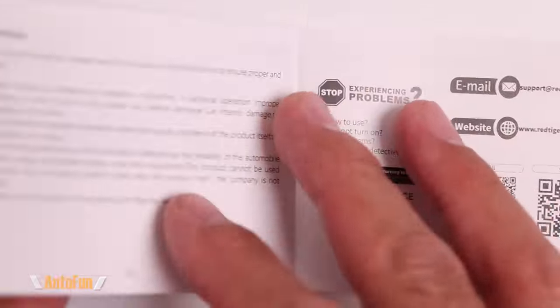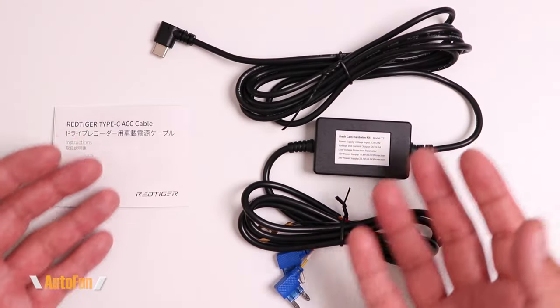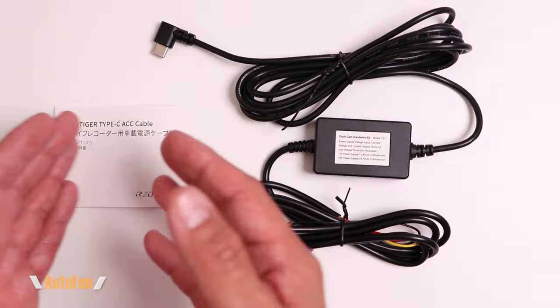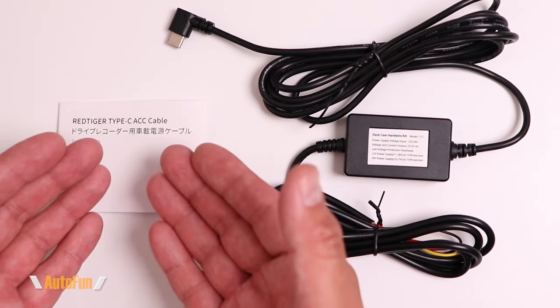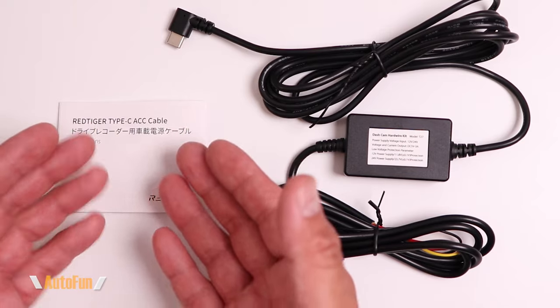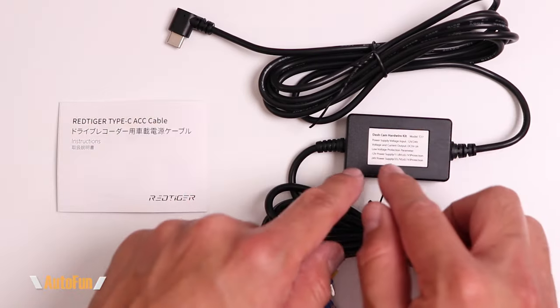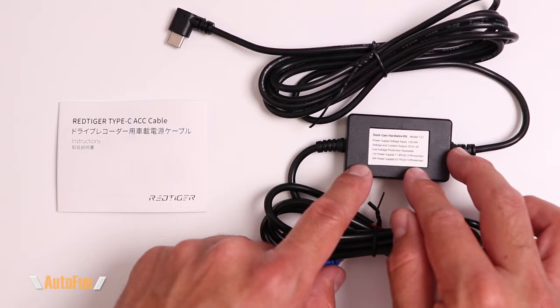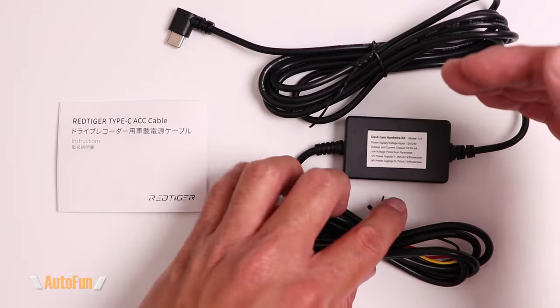Overall, we don't get much with the T27 hardwire kit besides the bare bone essentials, which is really just the kit and an instruction manual. I like that the instruction manual is very detailed; I wish it was a little larger in size. On this side I'm okay with not being able to adjust the low voltage cutoff because they picked 11.8, that's a nice conservative number.